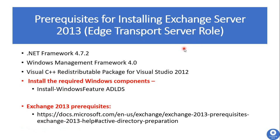For the Edge Transport Server role, only three software packages and one Windows component are required, since this server role is installed on a non-domain-joined machine and does not need other Windows components. You can download this software from the provided URL, and more details are available there as well.